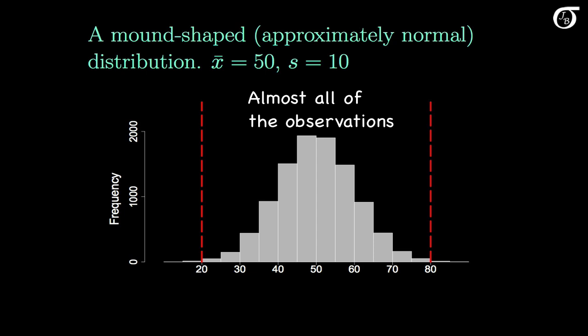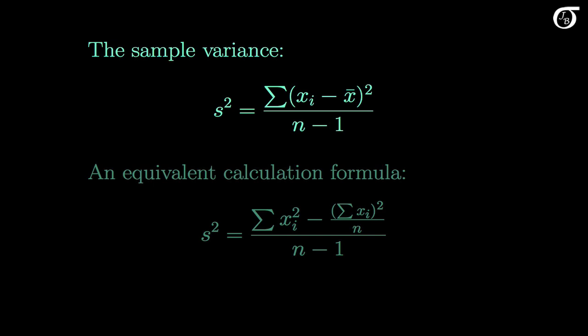The empirical rule gives us a feel for what the standard deviation means in terms of the dispersion of the variable. There is also an alternative calculation formula for the sample variance that can help reduce round-off error in hand calculations, though it is used less often today since we rely on software or calculators. I strongly recommend learning to use software or your calculator's pre-programmed functions to calculate the variance and standard deviation. It's useful to go through the calculations once or twice to understand what they mean, but then it's best to offload the calculation burden to software. That's a brief introduction to measures of variability.